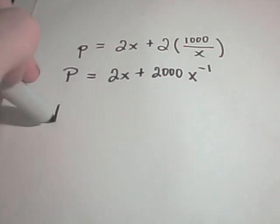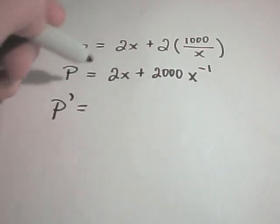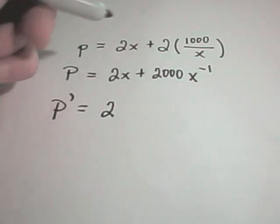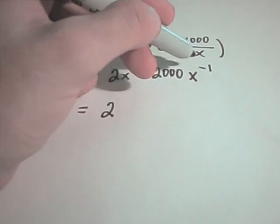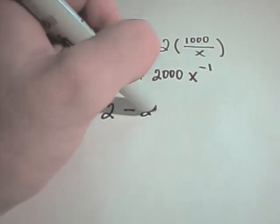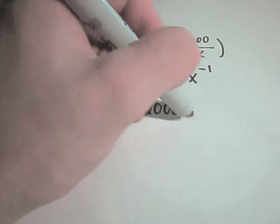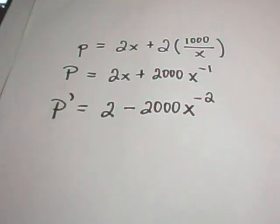This is the thing that I'm trying to minimize, so I'm going to take the derivative of it. The derivative of 2X is just 2, the X to the negative first, the negative will come out front, we'll get negative 2000X to the negative second.